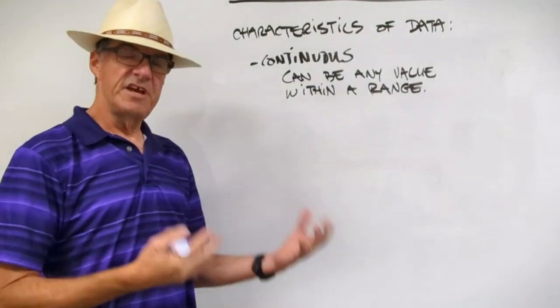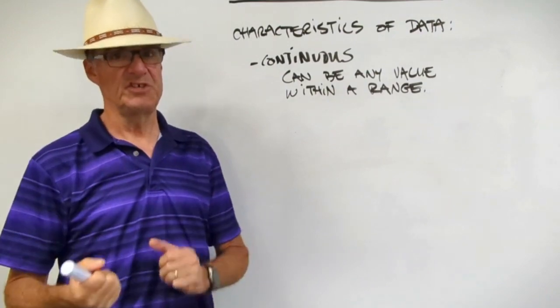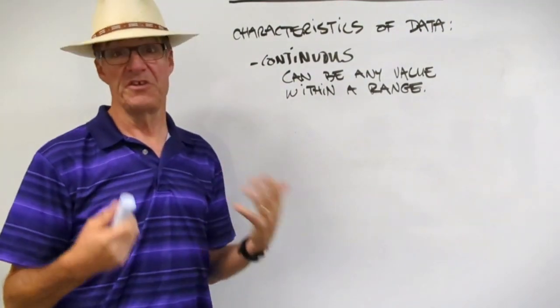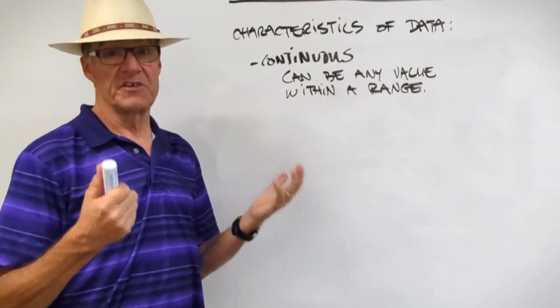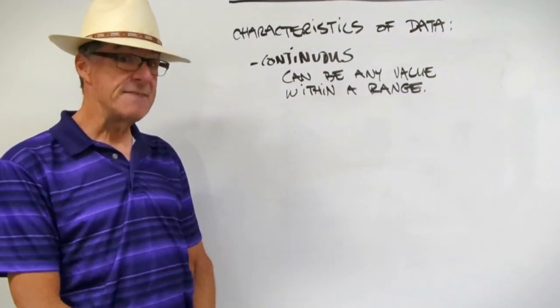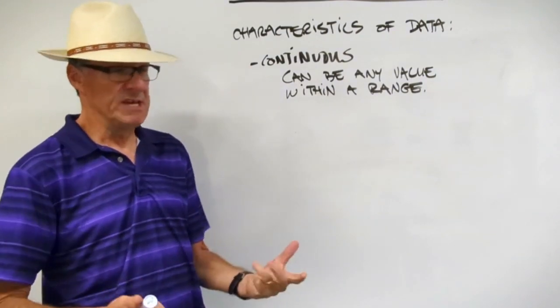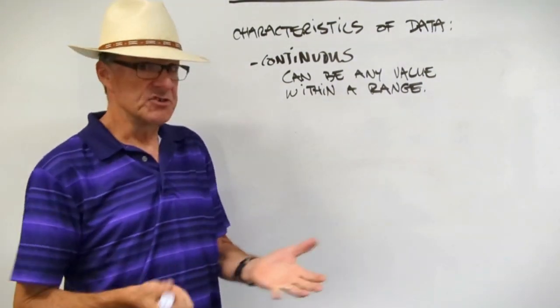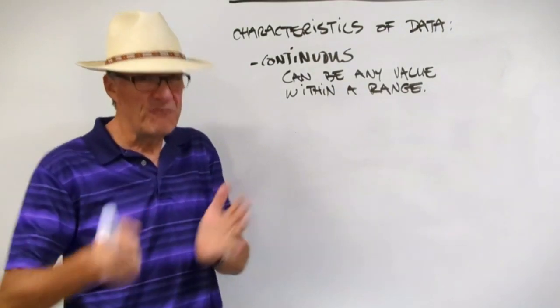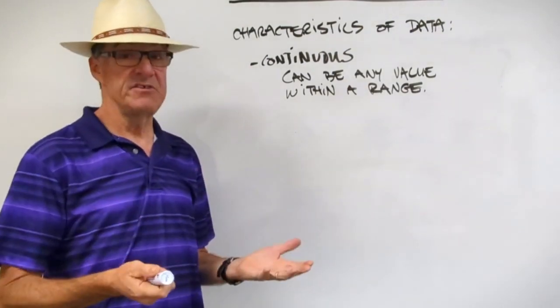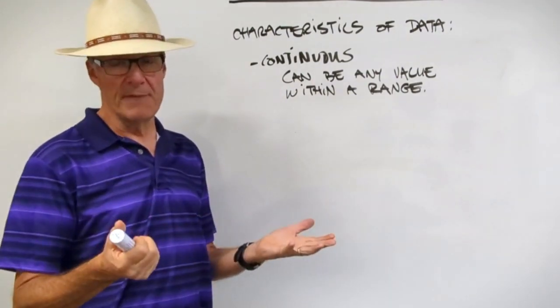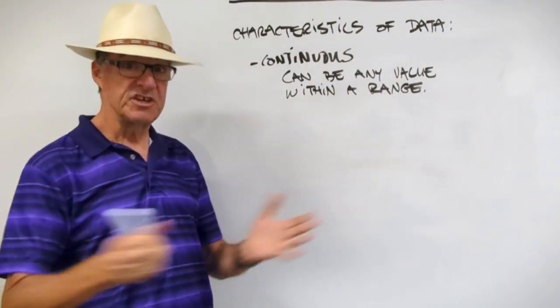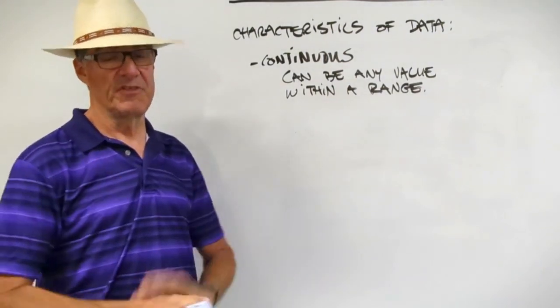If your data is not discrete, then most likely it's continuous. Continuous data can have any value within a range. For example, the amount of time I can hold my breath. It might be 48.97 seconds. It might be 121.234 seconds. It just depends on how long I can hold my breath and what my measurement tool is. It can fall within a range, but it can be any data within a range.